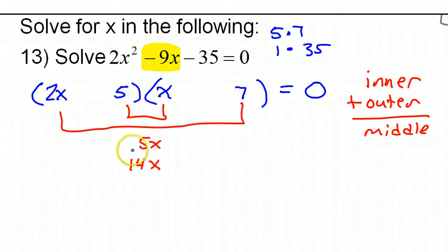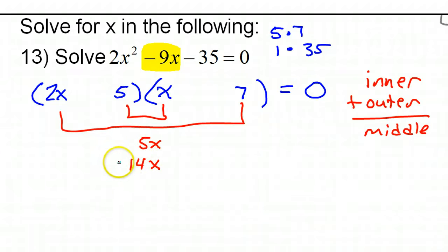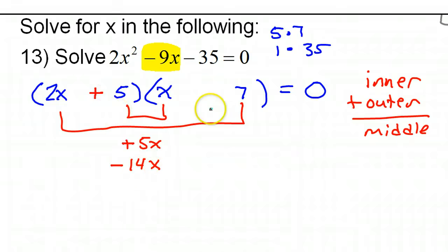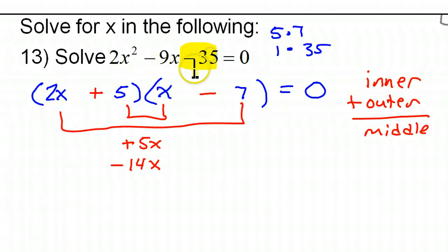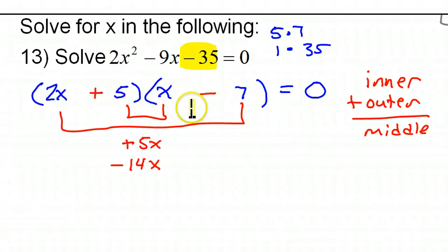I can control the signs. Is there a way I can get negative 9x out of 5x and 14x if I choose the signs properly? Yes, I can. I know that 14 minus 5 is 9, so if I have positive 5x and negative 14x together, that would make negative 9x. So for positive 5x, this would be positive, and for the negative 14, this 7 would be negative. Always check one last thing — the sign on the constant. Does positive 5 times negative 7 give us negative 35? Yes, a positive times a negative is a negative, so that works out fine.